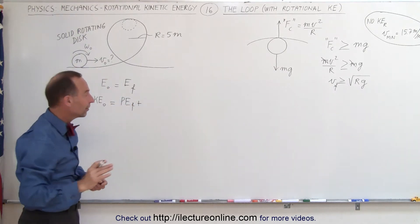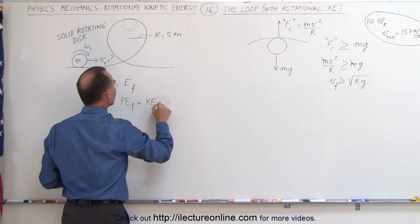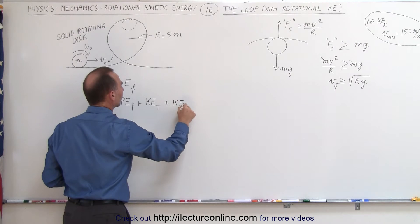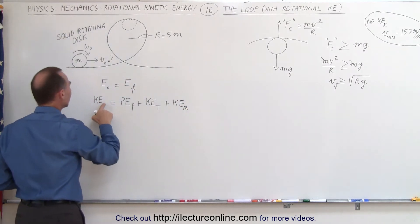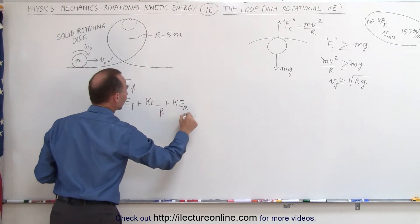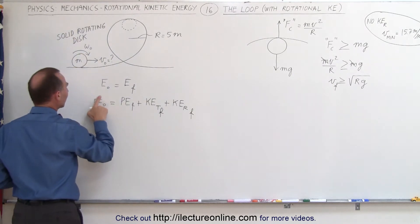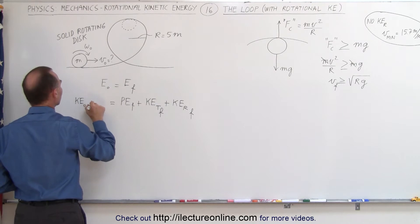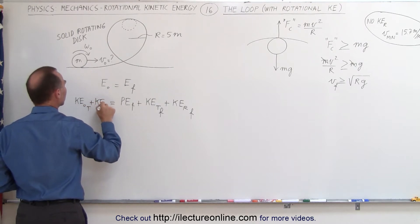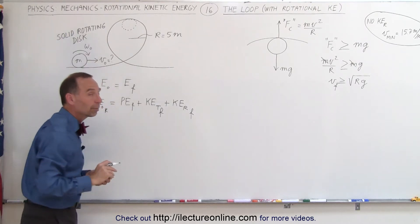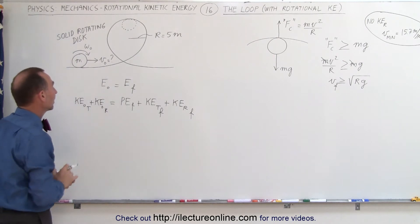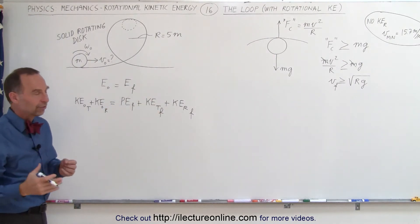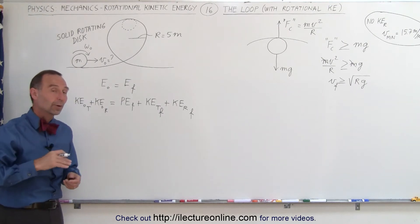Now there are going to be two different kinds of kinetic energy: translational kinetic energy and rotational kinetic energy. Over here for the final energies, and also over here on the initial side, instead of writing just kinetic energy initial, we should say kinetic energy initial in the translational sense plus kinetic energy initial in the rotational sense, because it will have both types of kinetic energy at the beginning as well as at the end. That's what's so different about this problem relative to the one we did before.